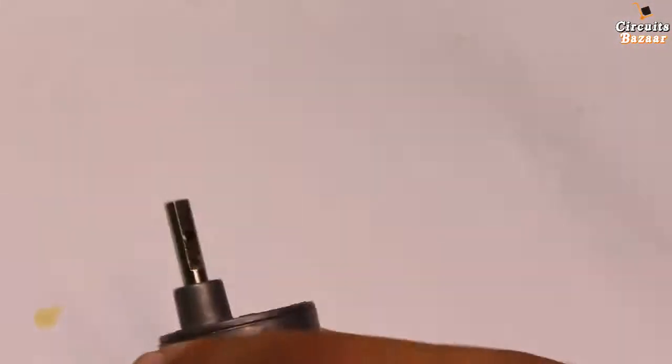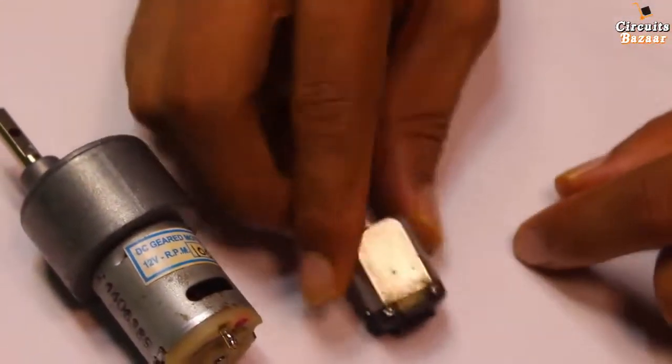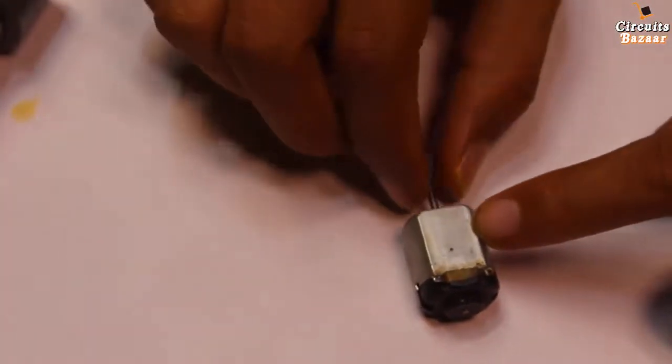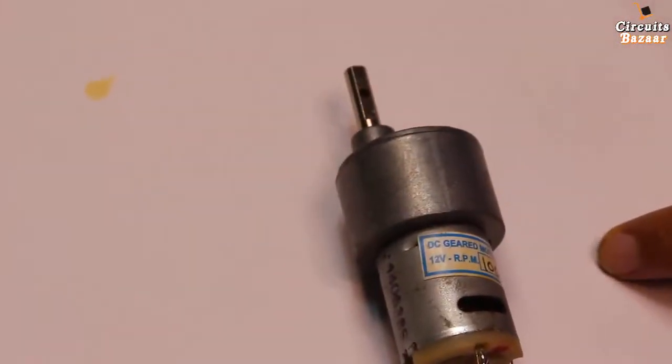So we are going to open it and this is another motor which is called TWY motor. You will find this motor in each and every type of toy, toys of children, right? So first we will open this Johnson's DC gear motor, then we will open the TWY motor.